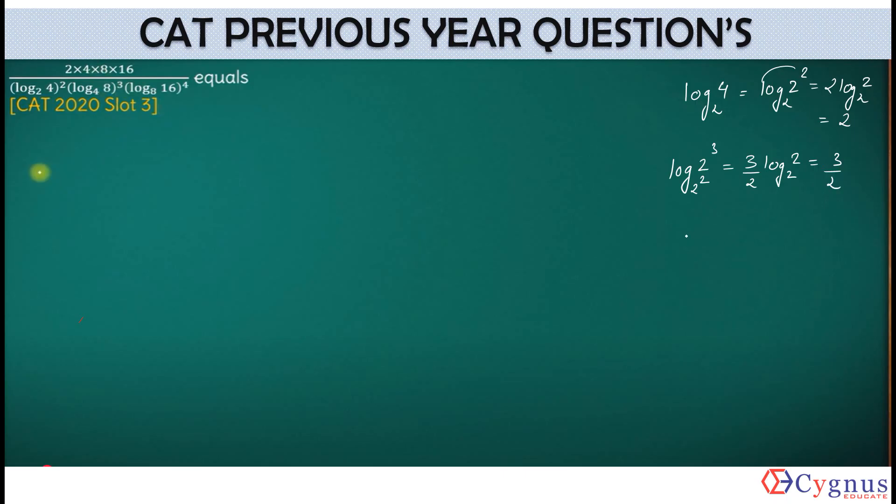What's the next term? Log of 16. The 16 itself can be written as 2 to the power 4. Well, 8 is 2 to the power 3. So what do we get here? 4 by 3 log of 2 to the base 2. So this becomes 4 by 3.